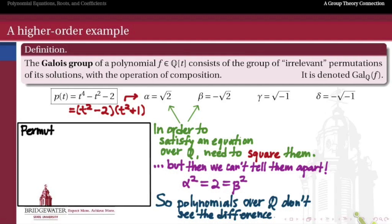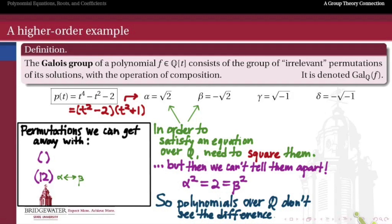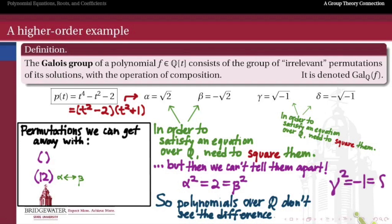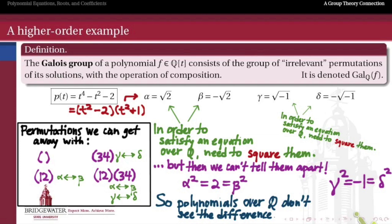Here are the permutations we know we can get away with: the identity permutation, and because α and β are identical after squaring, we can also transpose them - that's the permutation (1 2) if we order the roots 1, 2, 3, 4. The same thing is true of γ and δ, which are ±√(-1). If they're going to satisfy some equation over the rationals, we have to square them, but both their squares equal negative 1, so we can't tell them apart. So the transposition (3 4) is also something we can get away with. And if we can get away with both (1 2) and (3 4) separately, we can get away with doing both together - the permutation (1 2) composed with (3 4).